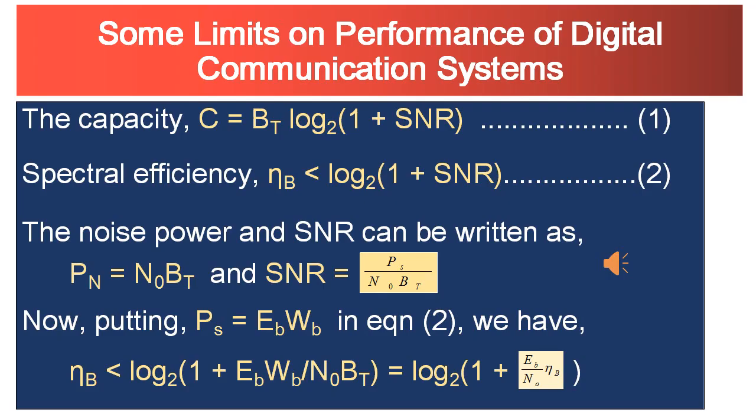If it is achievable, then reliable communication at spectral efficiencies will be below this line. If it is above the line, then reliable communication at spectral efficiencies will not be achievable.